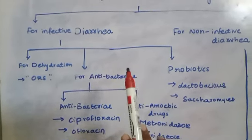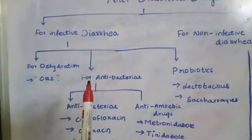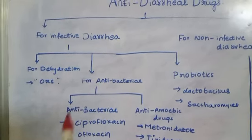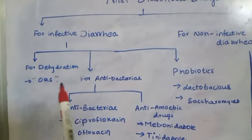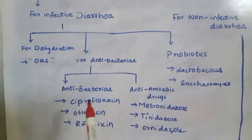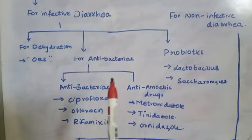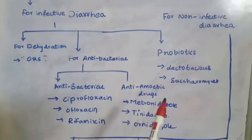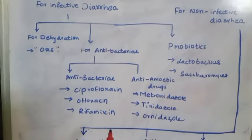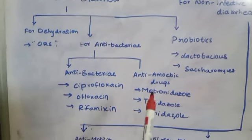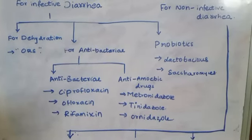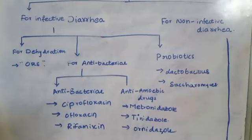For infective diarrhea, the drugs are classified for dehydration — because diarrhea involves acute loss of water — so we use ORS. For antibacterial treatment we use ciprofloxacin, ofloxacin, and rifaximin, and for anti-amoebic treatment we use metronidazole, tinidazole, and ornidazole.